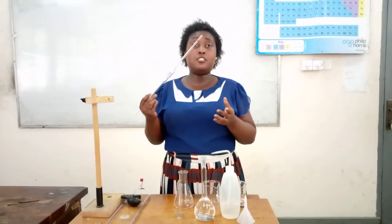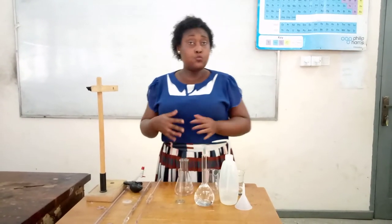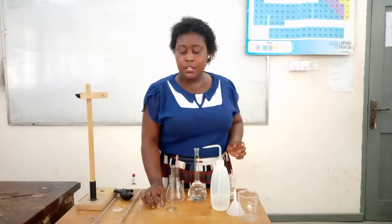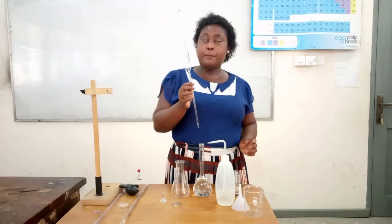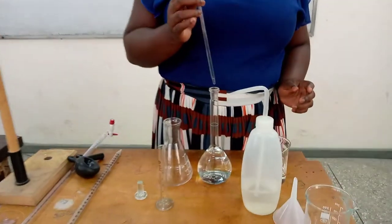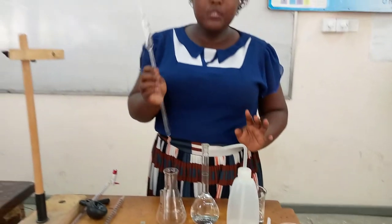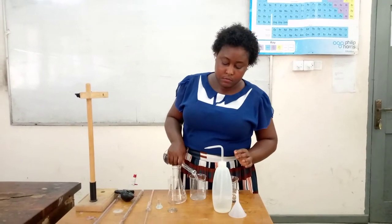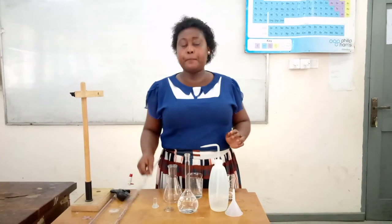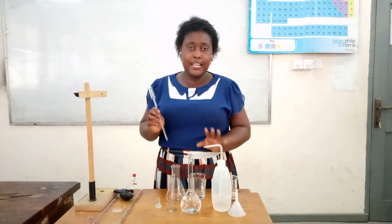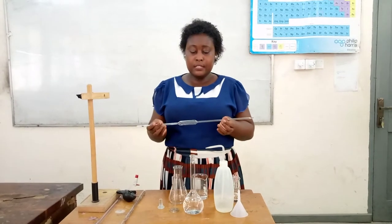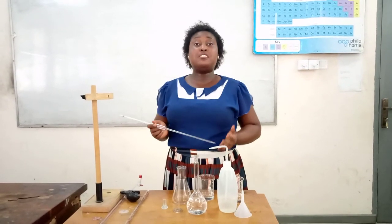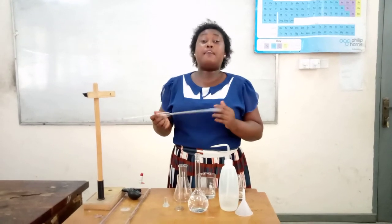My pipette is clean — I have washed it with distilled water. Now I can pipette the solution I am supposed to pipette. When you are pipetting from the solution, I have seen students who put the pipette directly into the volumetric flask to pipette from it. Please, you don't do that. You take another clean beaker, then pour a little amount of the solution, then you pipette from the beaker. Don't pipette straight from the volumetric flask — it is not done, it is unacceptable. Now I have to rinse the pipette again with the solution that I am supposed to pipette. You rinse it three times — the reason why we rinse it three times is to avoid dilution.